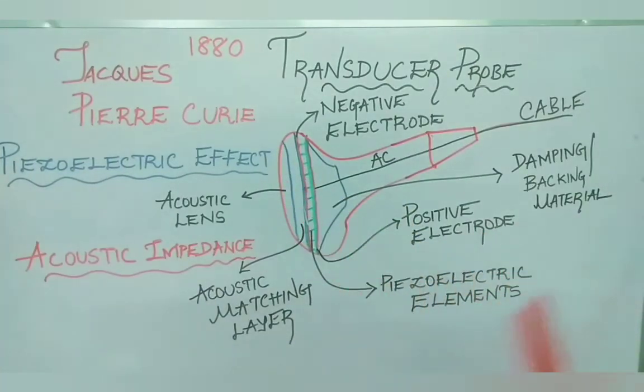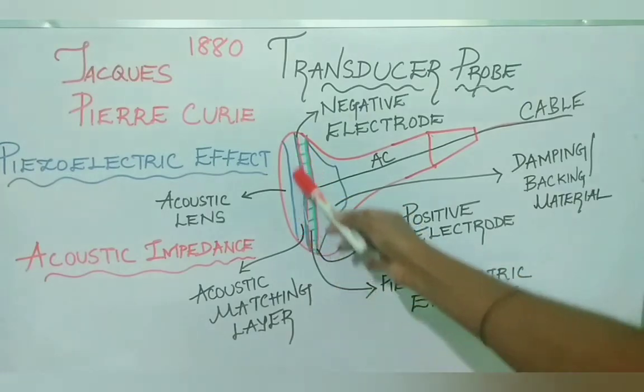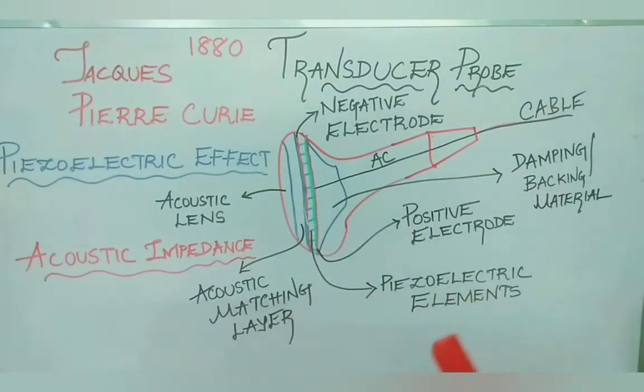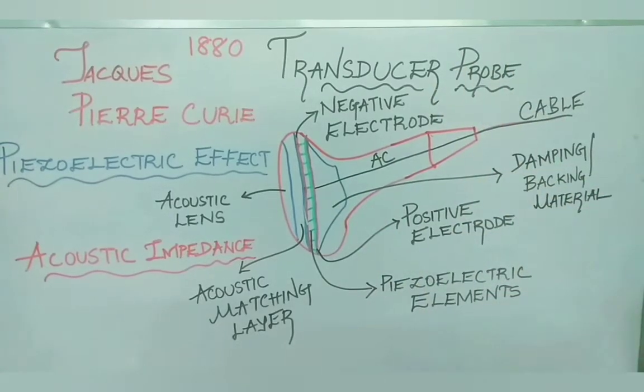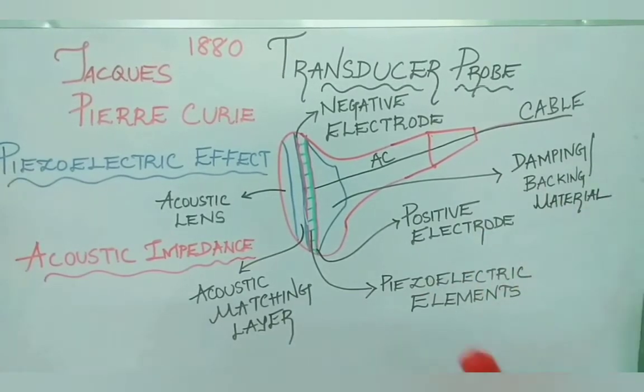Acoustic lens prevents the ultrasonic waves from spreading and focuses them to improve resolution. Acoustic matching layer provides the required acoustic impedance gradient for the acoustic energy or sound waves to smoothly penetrate the body tissue and for reflected acoustic waves to smoothly return to the transducer for detection.